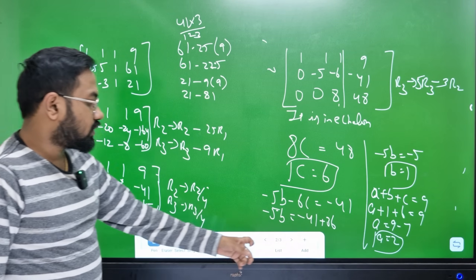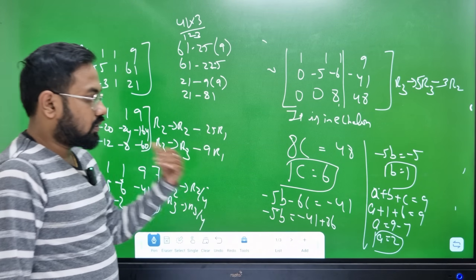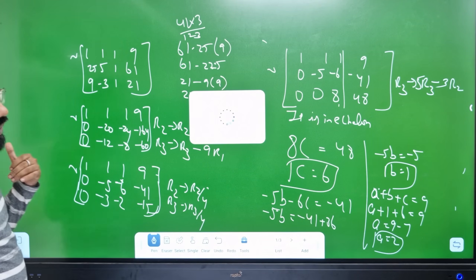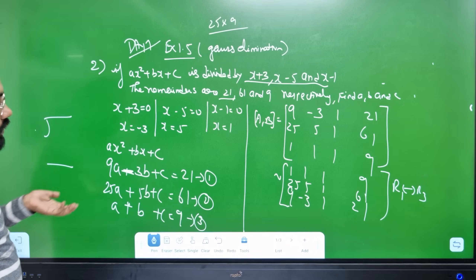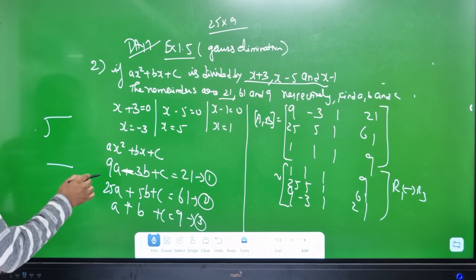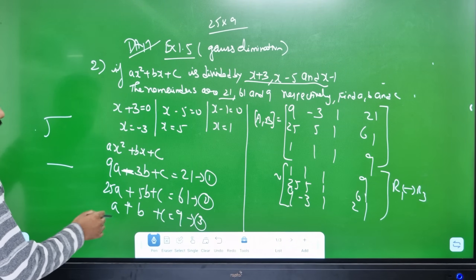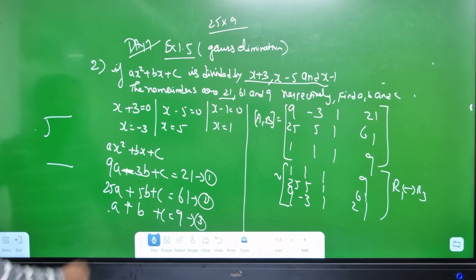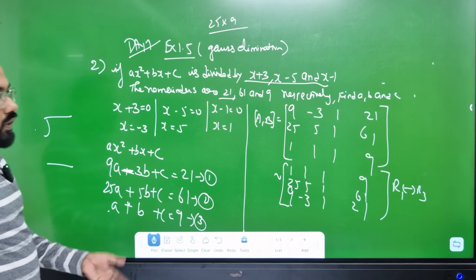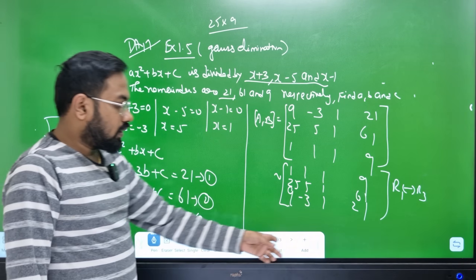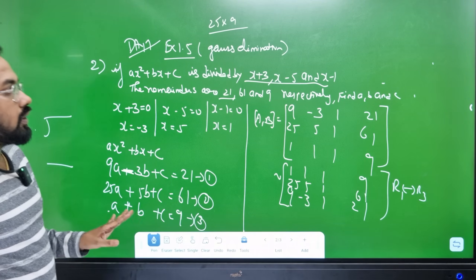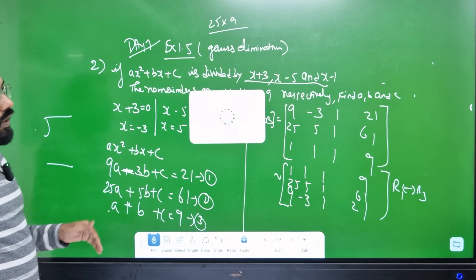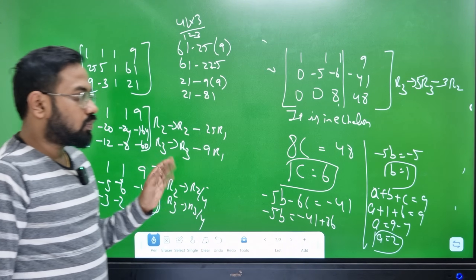Let's verify: a equals 2, b equals 1, c equals 6. Plugging back in: a plus b plus c equals 9. This confirms our solution. This is the Gaussian Elimination Method — you can also write it using the rank method, where the rank is equal to 1.